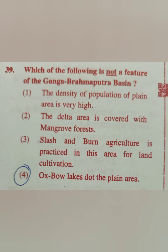Question 39: Which of the following is NOT a feature of Ganga-Brahmaputra basin? The delta area is covered with mangrove forest — this is correct. Slash and burn agriculture is practiced in this area — this is wrong. Oxbow lakes dot the plain area — this is correct. So the incorrect statement, option number 3, is the answer.